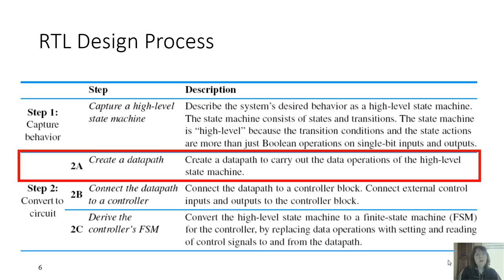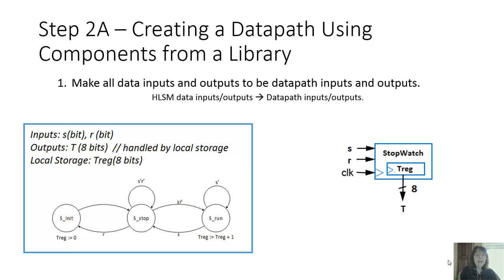Step 2A of our RTL design process is create a data path. So we need to create a data path to carry out the data operations. And so we take a look at our HLSM again, and we know that our data path should consist of having our inputs and outputs being defined. We have our outputs as T, we have our inputs S and R.